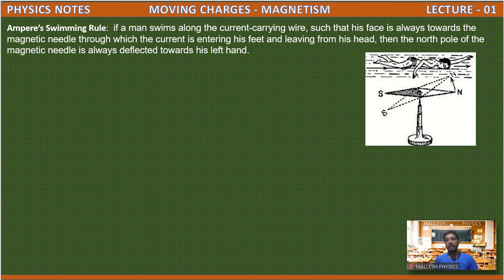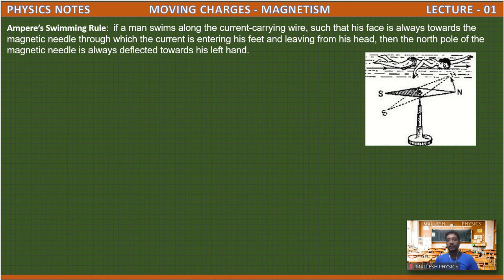First rule: Ampere's swimming rule. By using this rule, how do we find the magnetic field direction? If a man swims along the direction of the current carrying wire such that his face is always towards the magnetic needle, with current entering his feet and leaving from his head, then the north pole of the magnetic needle is always deflected towards his left hand.